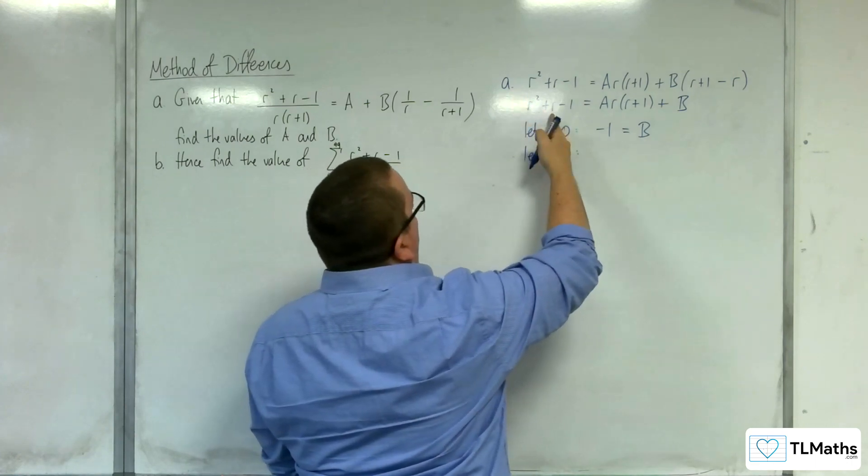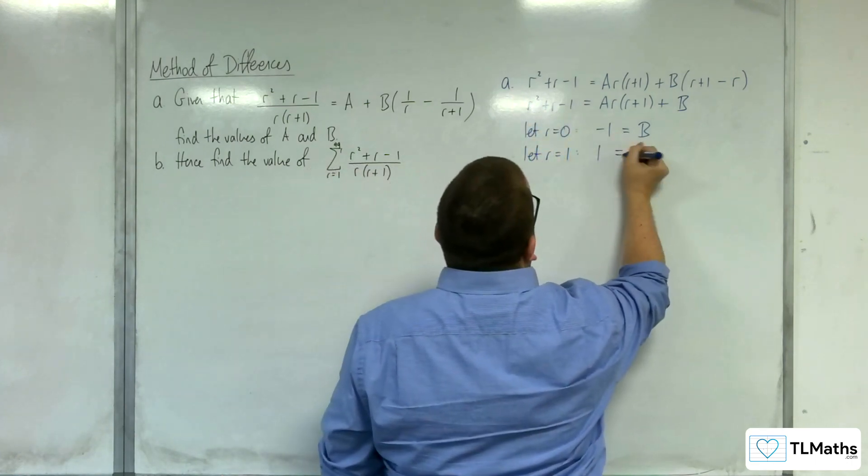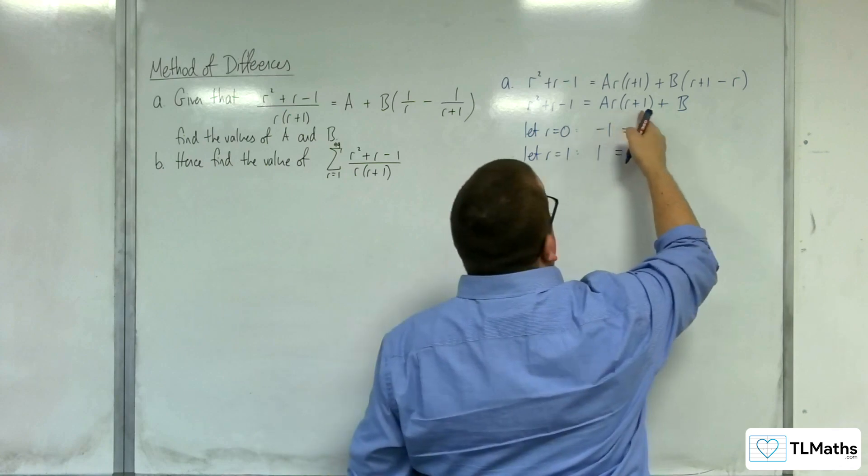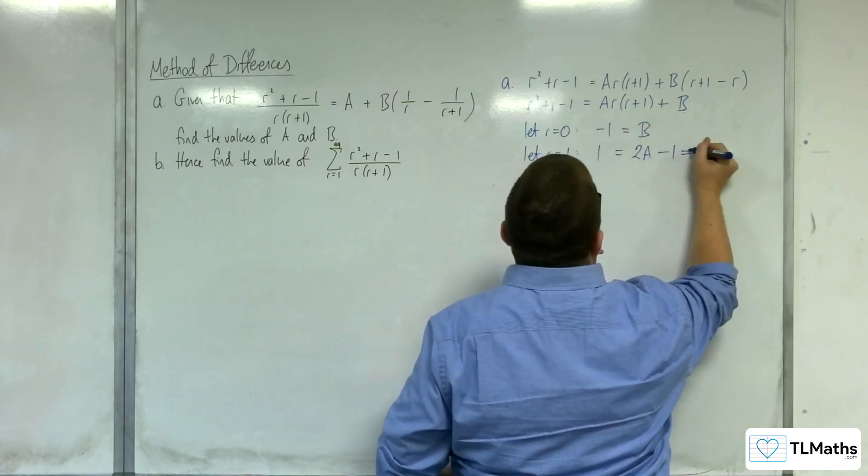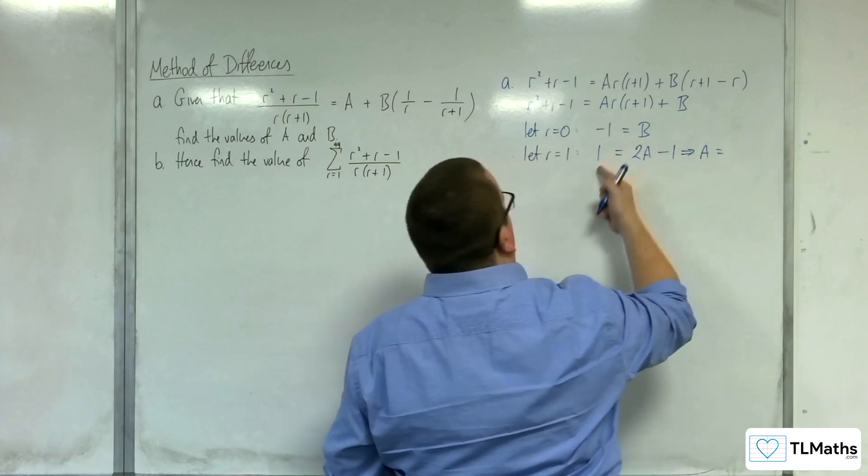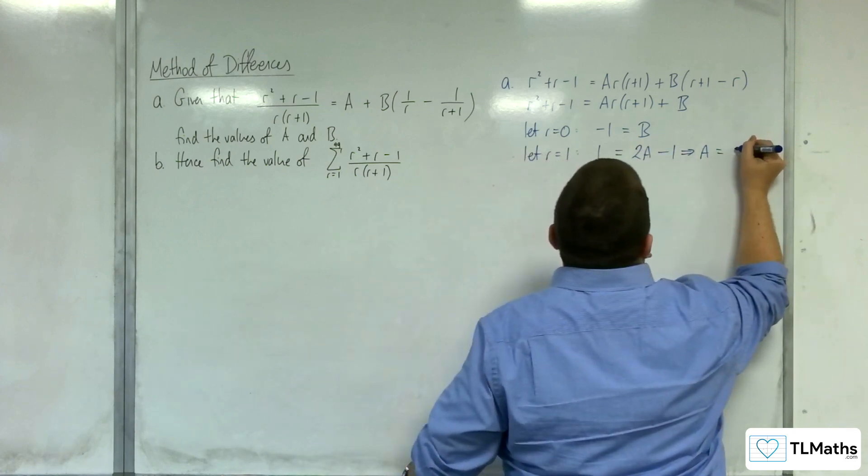The left hand side, I'm going to have 1 plus 1 take away 1, so that's 1. We're going to have 1 times 2, so 2 times a, and b I already know is minus 1. So adding the 1 to both sides, so that means that a has got to be 1.